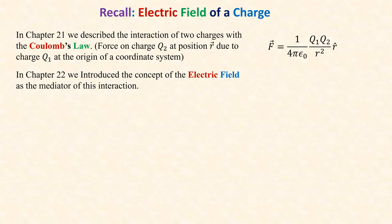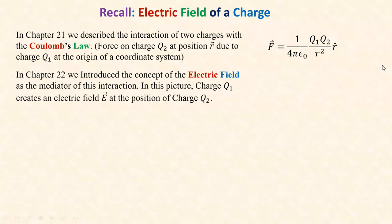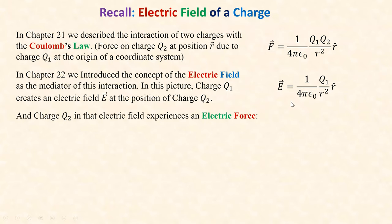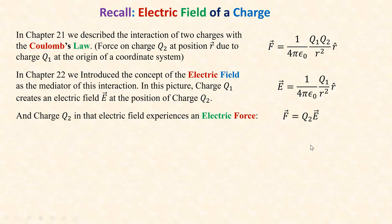We divided Coulomb's Law formula by the charge Q2 and said that Q1 creates an electric field everywhere in space. The electric field is 1 over 4π epsilon-naught times Q1 over r-squared, in the r-hat direction if the charge is positive, and opposite if negative. Then a charge Q2 in that electric field experiences an electric force: F equals Q2 times E. If Q2 is positive, the force is in the same direction as the field; if Q2 is negative, the force is opposite to the field.